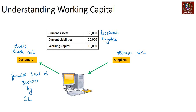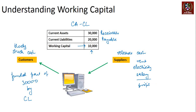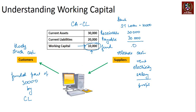My initial shortfall was ₹30,000. By creating a payable of ₹20,000 through the supplier agreement, my working capital requirement reduces to CA minus CL, which is ₹30,000 minus ₹20,000 = ₹10,000. If I do not fund this remaining ₹10,000, I will still not be able to pay electricity, rent, or salary. One way to fund it is to go to a bank and take a short-term loan of ₹10,000, making current liabilities ₹30,000, which leaves working capital requirement as zero.